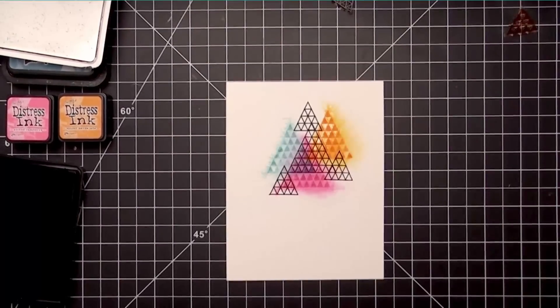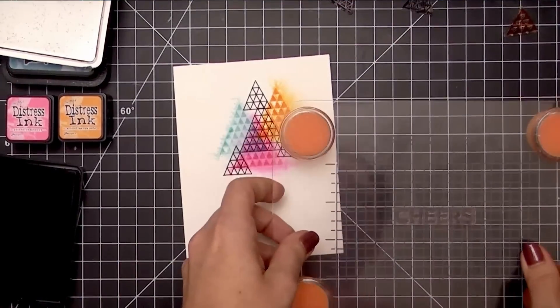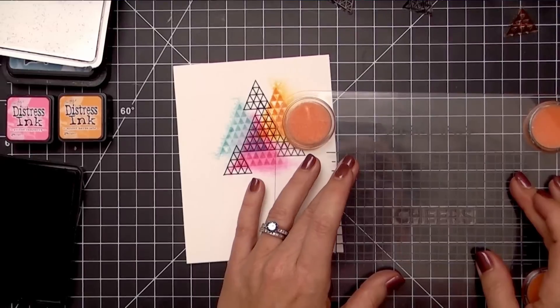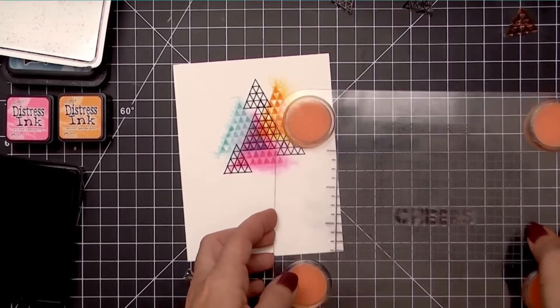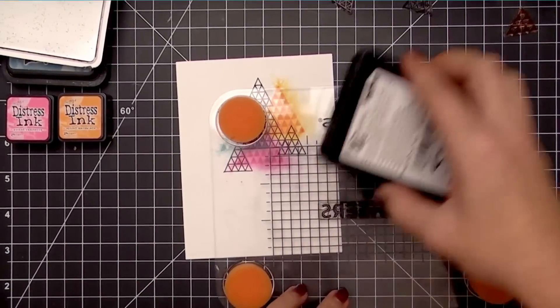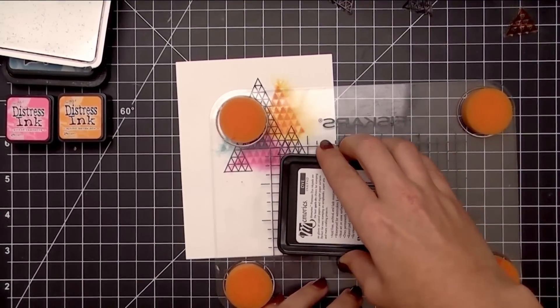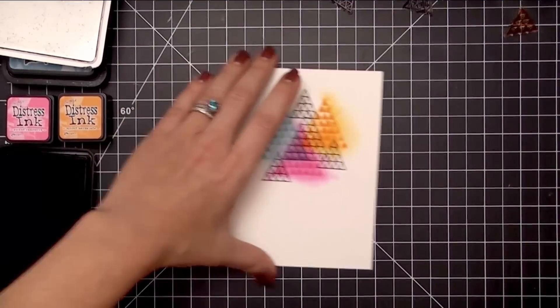While I've got that black ink out, I'm going to go ahead and stamp my sentiment. I'm using this bold Cheers that's also included in the set. Although this is a New Year set, I've included separate sentiments like Class Of and Cheers so that you can use this all year long.